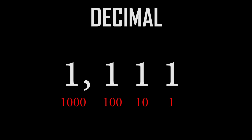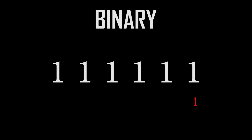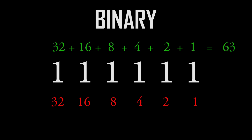Each digit in decimal is ten times as large as the digit to the right: one, ten, one hundred, one thousand. Then you add up the numbers and get the final answer — two thousand plus three hundred plus sixty plus eight equals two thousand three hundred sixty-eight. Each digit in binary is only two times as large as the digit to the right: one, two, four, eight, sixteen, thirty-two, and so on. You add up the numbers to get the final answer, only adding up where there is a one.